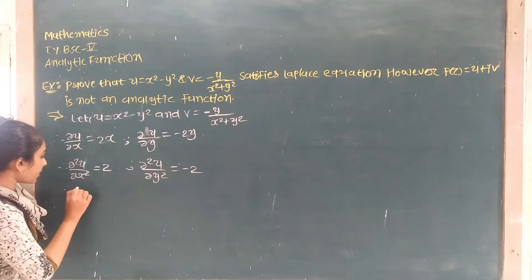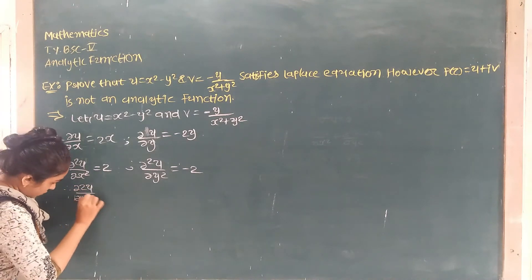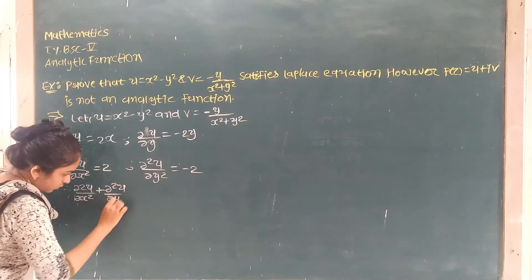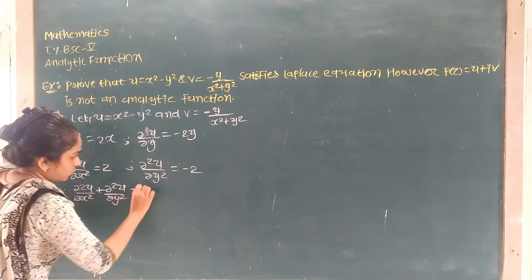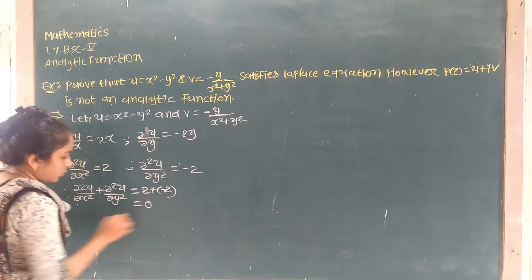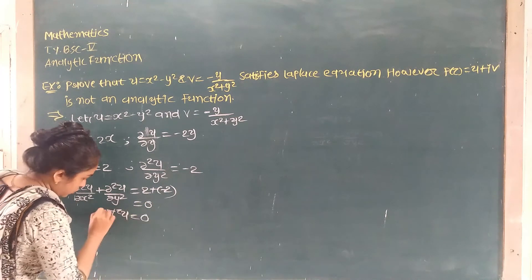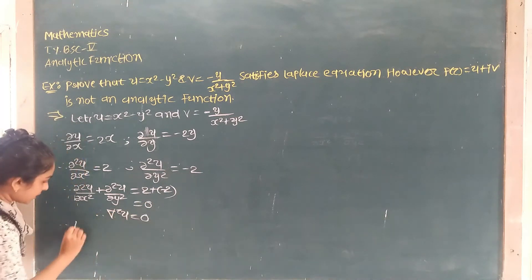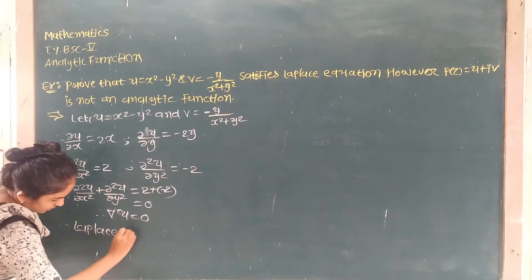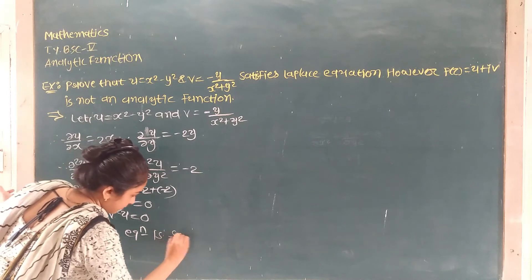The Laplace equation gives us: 2 plus y upon y plus y, and then 2 plus minus 2 equals 0. So the Laplace equation is satisfied.